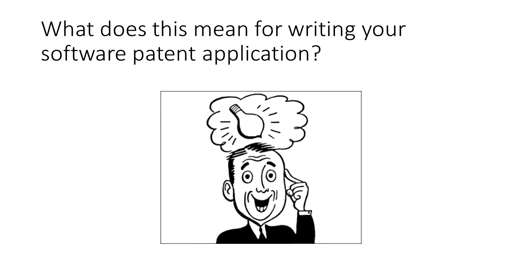So what does this mean for writing your patent application? If we're writing a new patent application now, knowing what we know about ALICE — keep in mind that many of the patents that underwent an ALICE challenge, including the ones we just discussed, were written way before the ALICE decision, some going back to the 1990s. But now that we know ALICE is here and we're writing a new software patent application, what can we do to help give us a chance to overcome an ALICE rejection? This is an evolving area, but based on what we know today, here are a few tips.